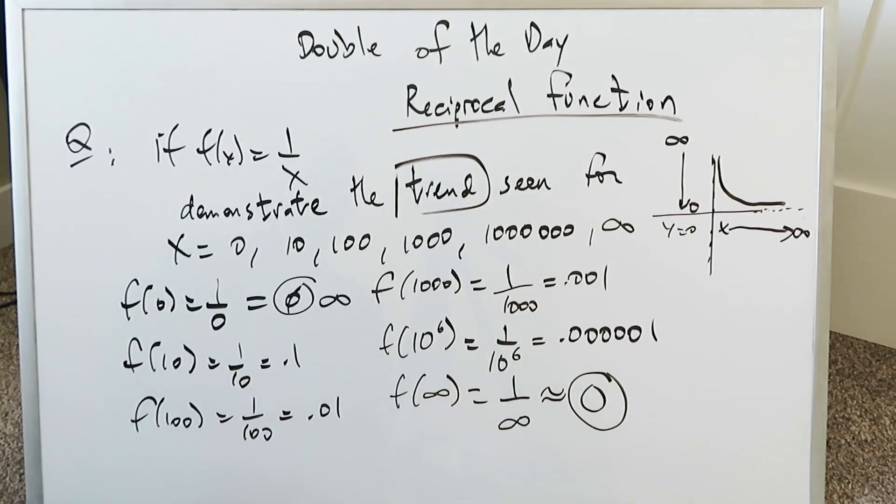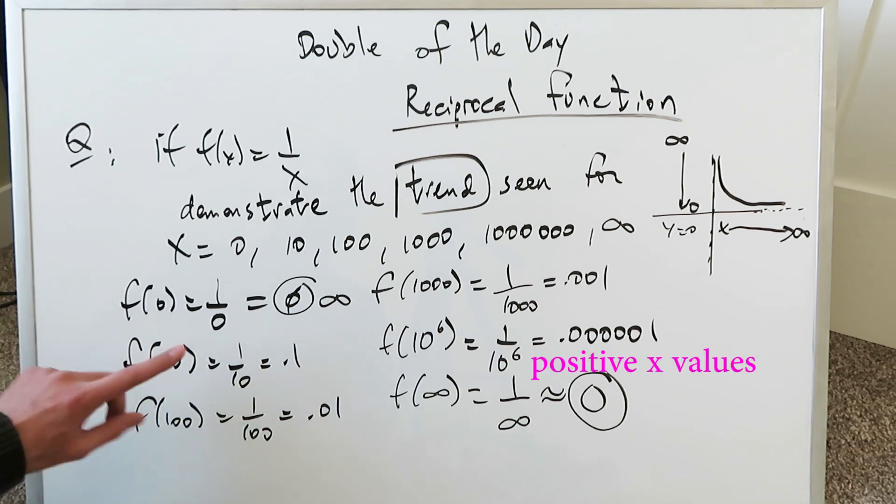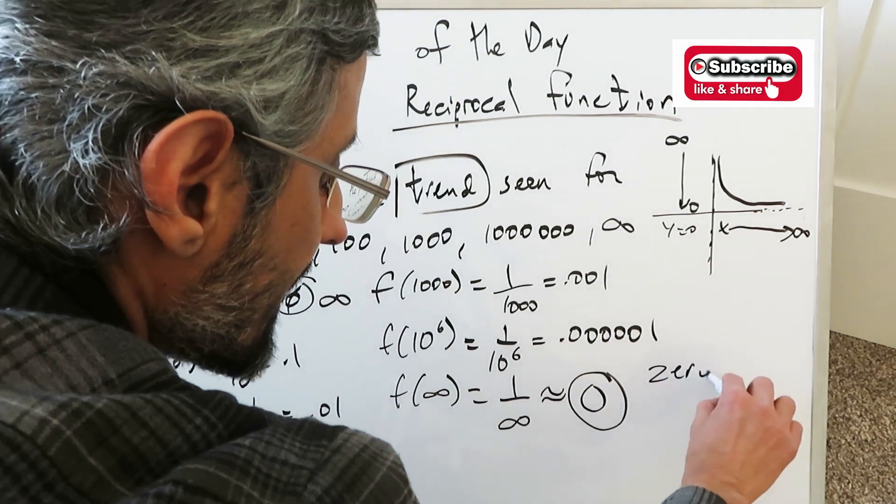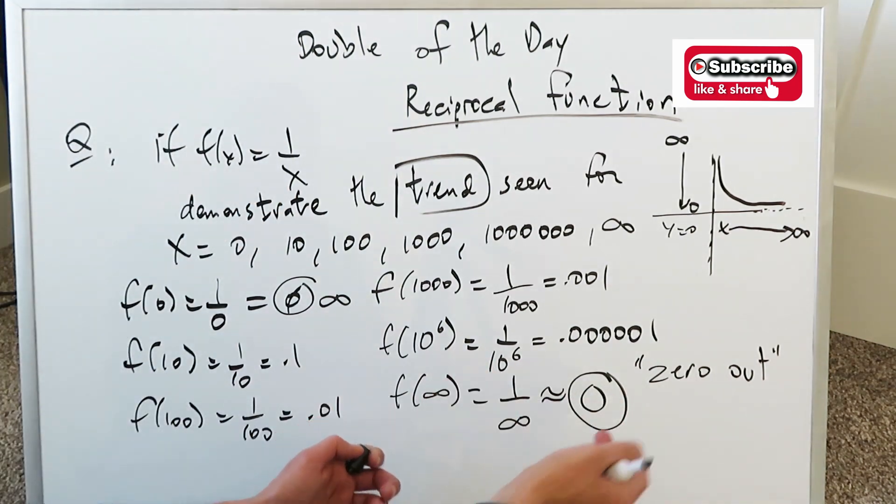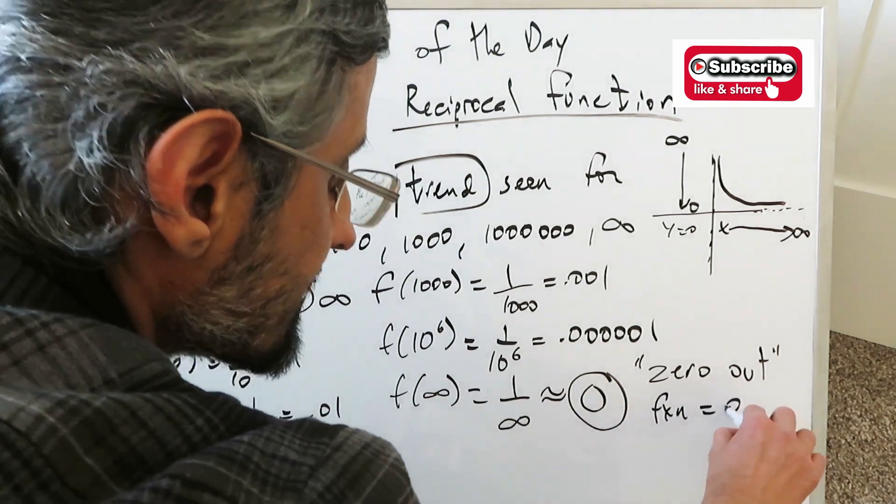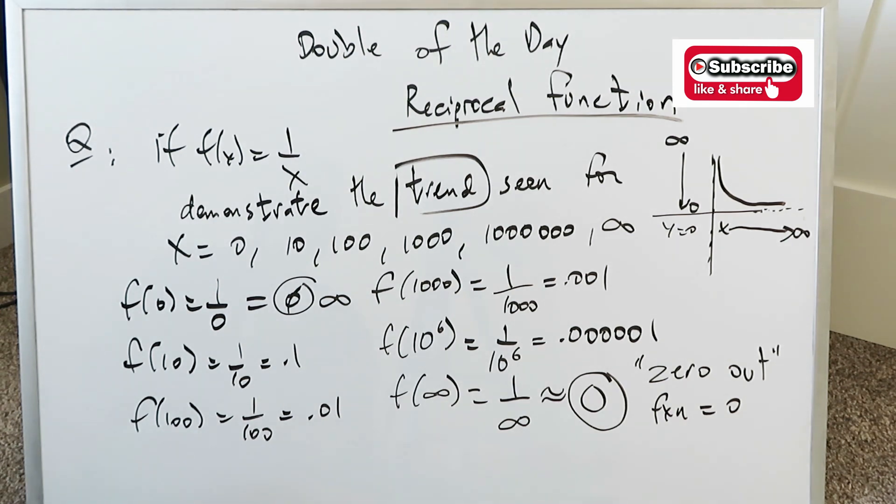So let's just end the video with that, but keep in mind the trend. For reciprocal functions, as you put larger and larger values, your entire function will zero out. And that's a good term to remember. Zero out doesn't mean that you've made a 0 on the denominator. It means your function here will equal a 0. It will become a 0. Thank you for watching. Have a nice day.